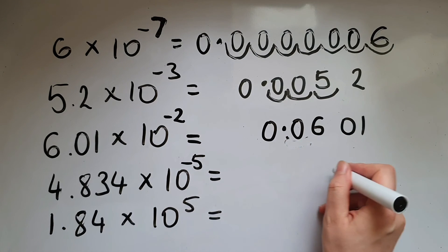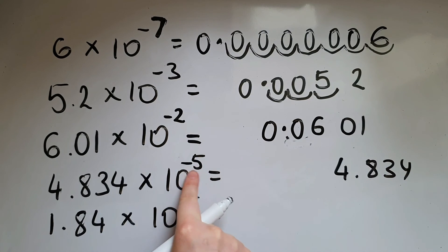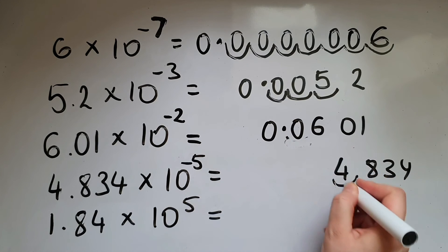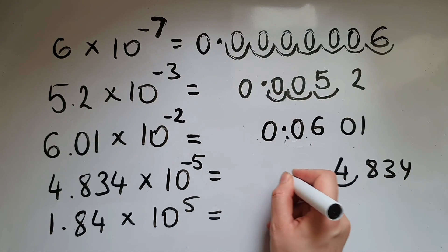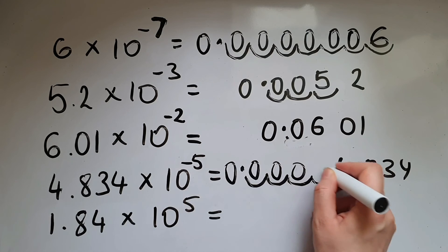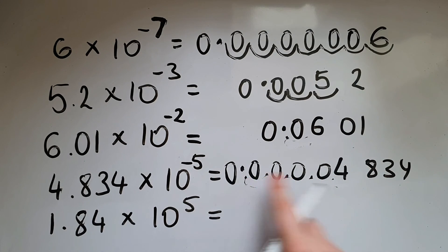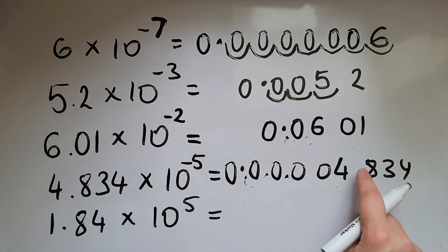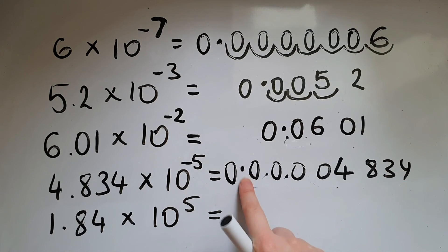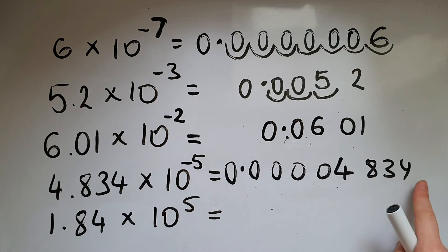We've got 4.834 times 10 to the power of negative 5, and we move 5 places to the left: 1, 2, 3, 4, 5. Place the decimal point, put a zero in front, fill the gaps. The answer is 0.00004834.